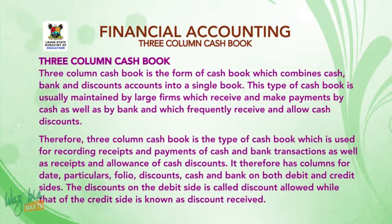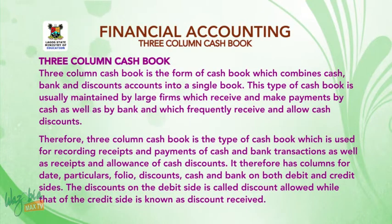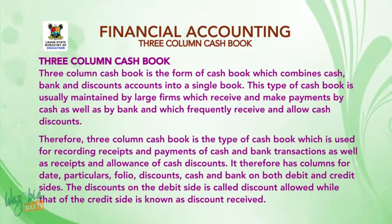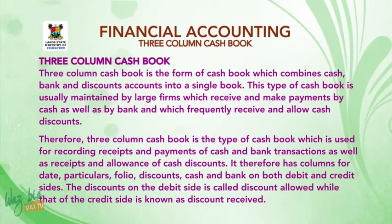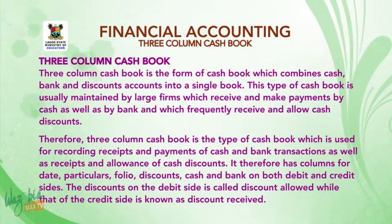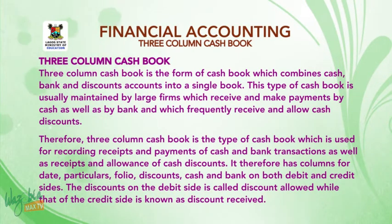What is three column cash book? Three column cash book is the form of cash book which combines cash, bank, and discount accounts into a single book. This type of cash book is usually maintained by large firms which receive and make payments by cash, and which frequently receive and allow cash discounts. Therefore, the three column cash book is the type used for recording receipts and payments of cash and bank transactions, as well as receipts and allowance of cash discounts.